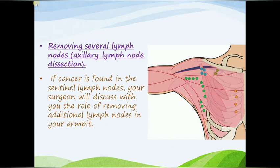Next is removing several lymph nodes, called axillary lymph node dissection. If cancer is found in the sentinel lymph node biopsy, your surgeon will discuss the role of removing additional lymph nodes from your armpit.